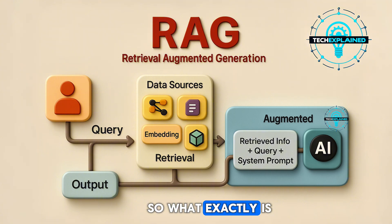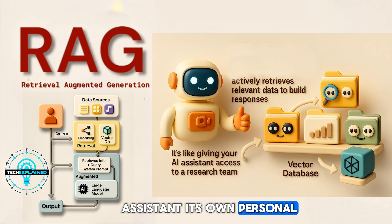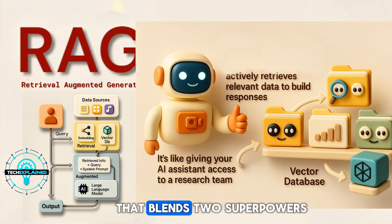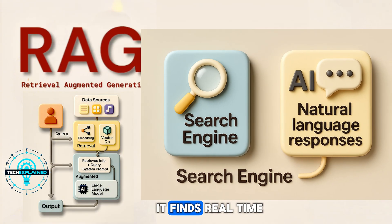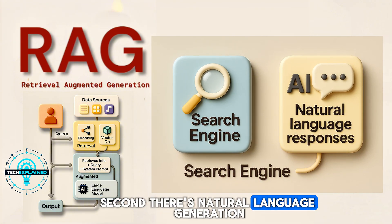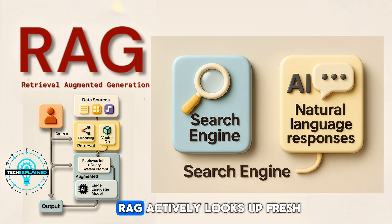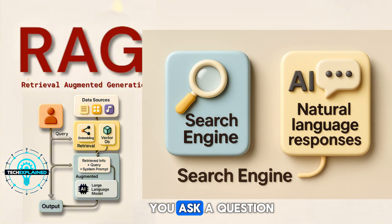So what exactly is RAG? Think of RAG like giving your AI assistant its own personal research team. It's a smart framework that blends two superpowers. First, there's the search capability — it finds real-time, trusted information. Second, there's natural language generation. It crafts responses that sound human and natural. Instead of just guessing from past training, RAG actively looks up fresh, relevant info every time you ask a question.